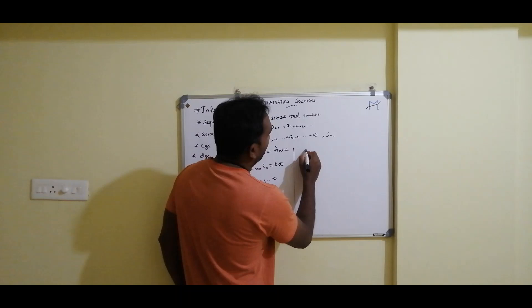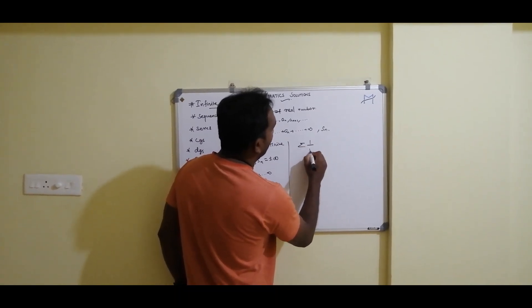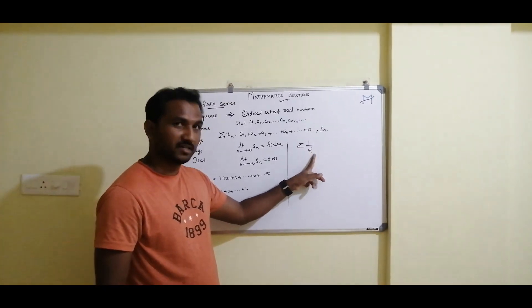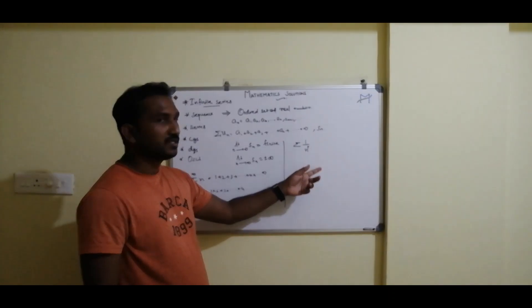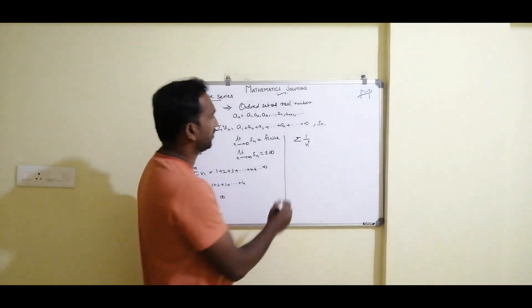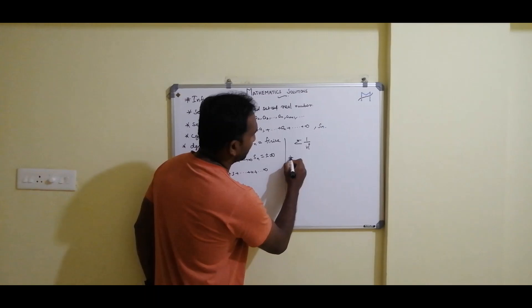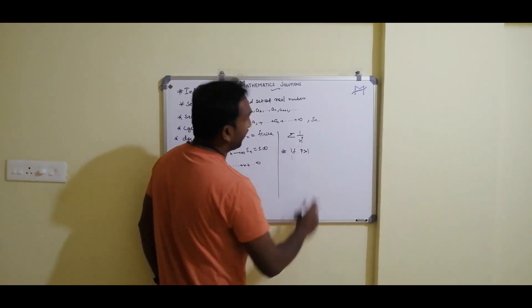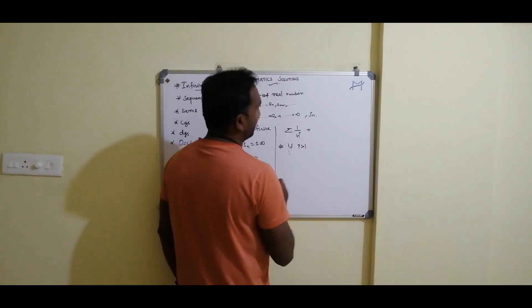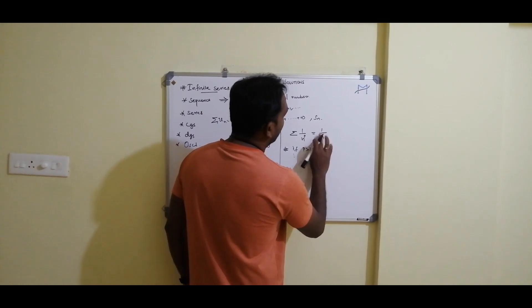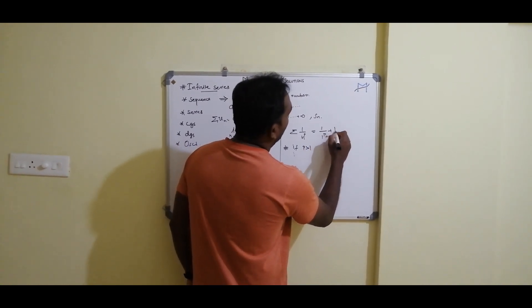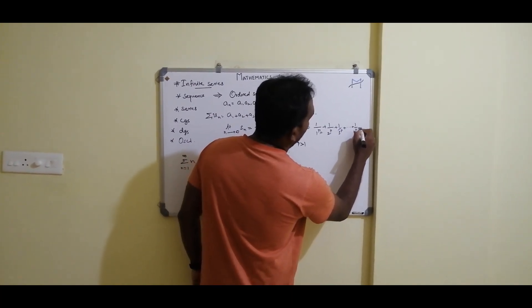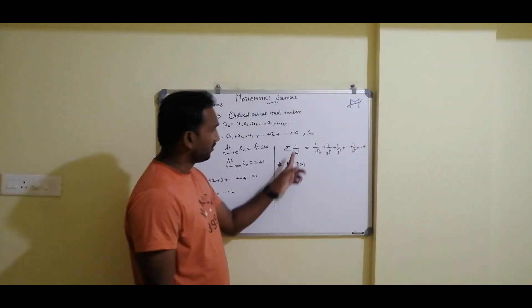Next, we consider the p-series. The p-series is Σ(1/n^p). Depending on the value of p, the series will become convergent or divergent. The p-series can be written as 1/1^p + 1/2^p + 1/3^p + ... + 1/n^p + ... up to infinity.